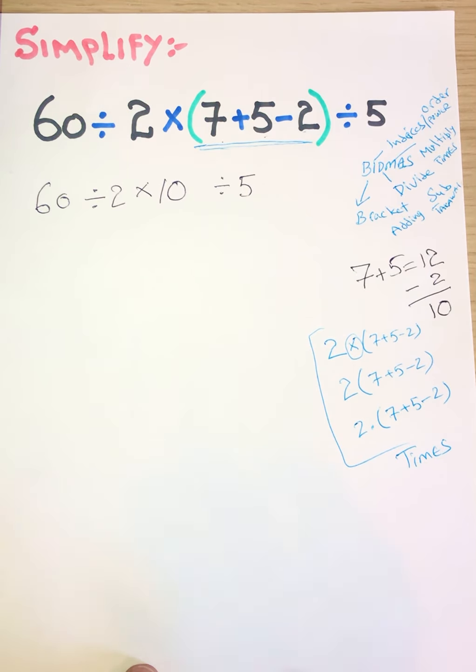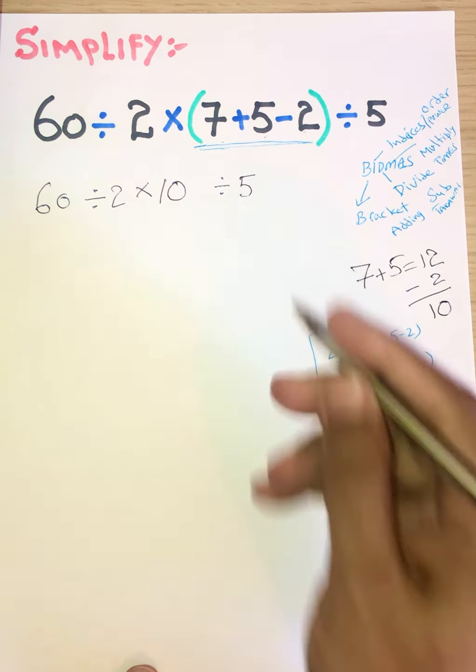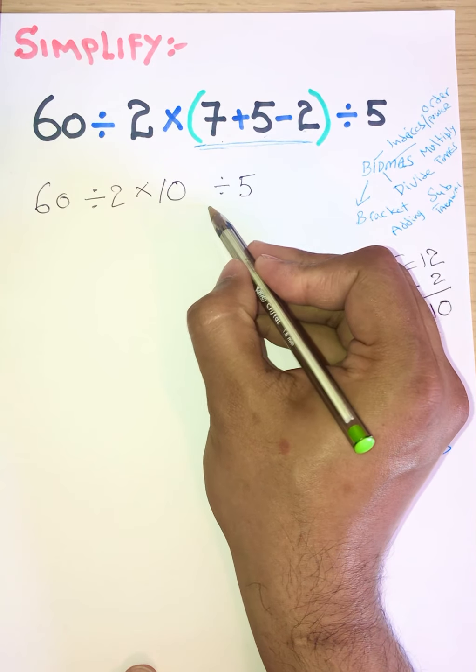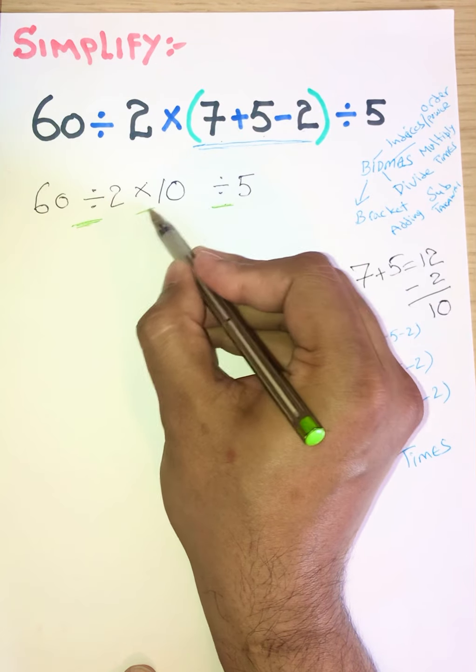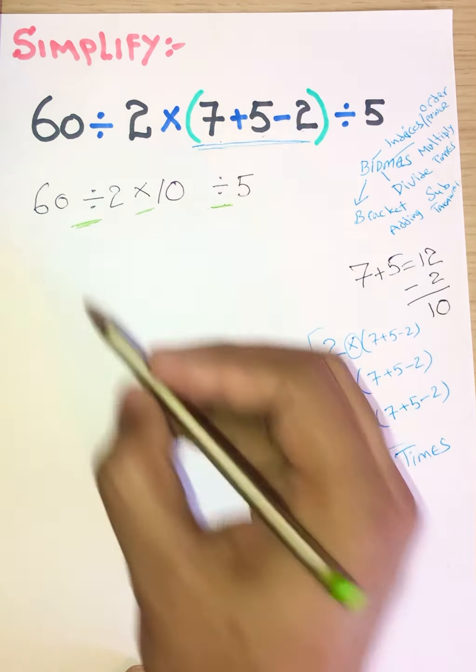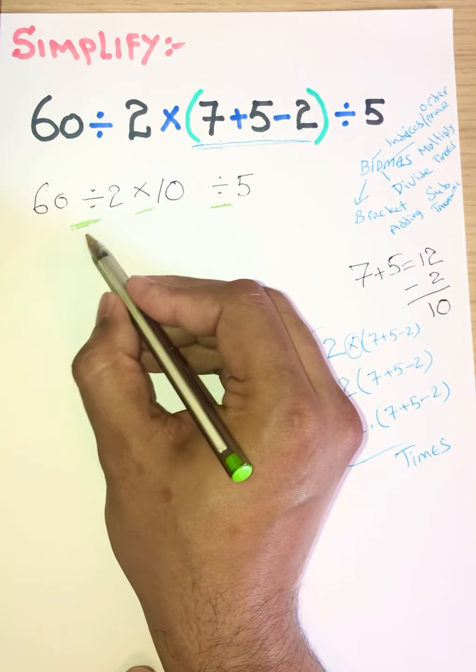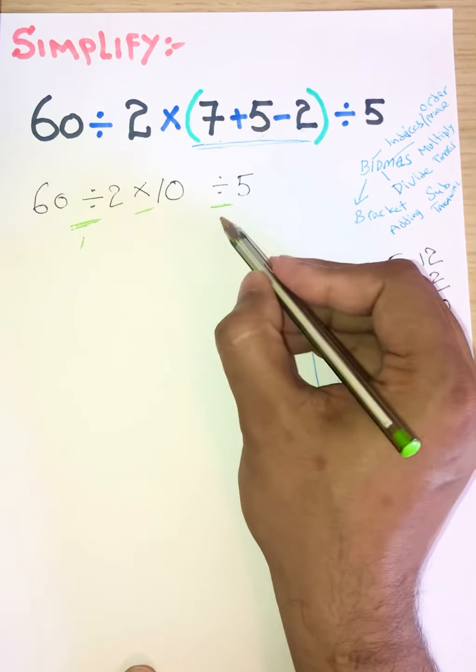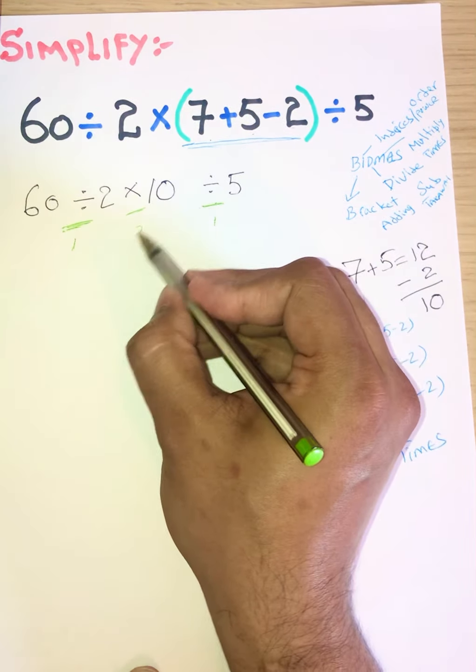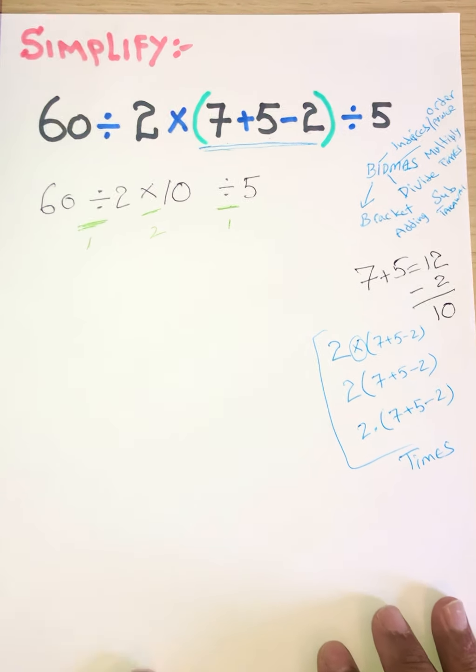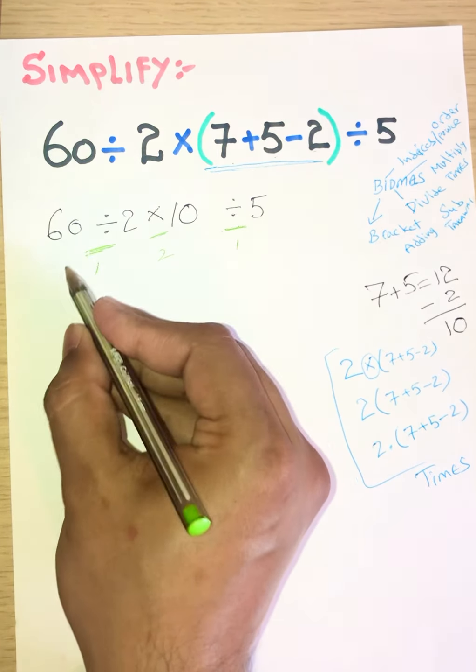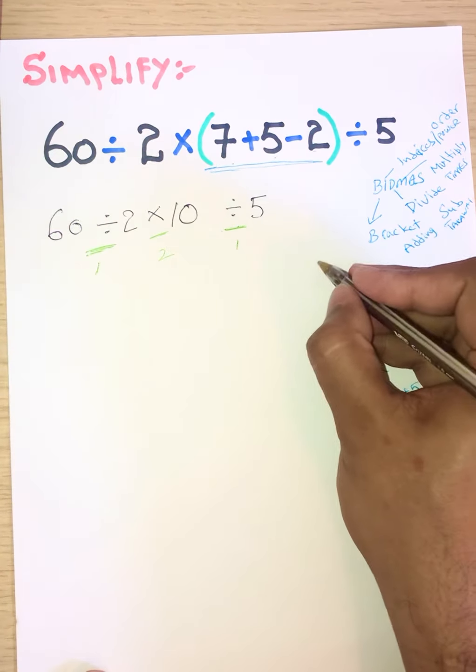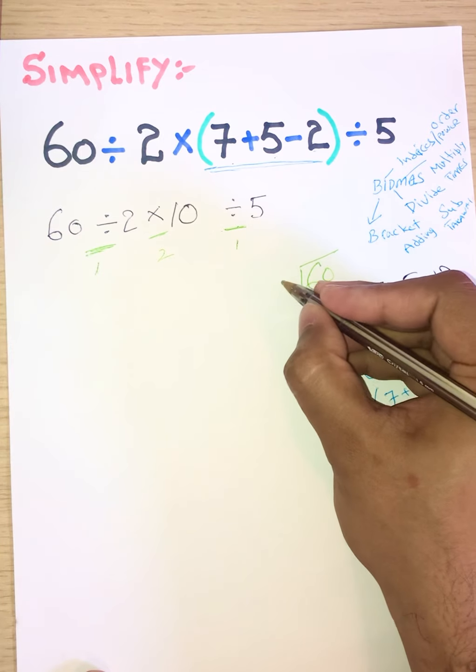Second part of it - we have 4 values and 3 operations we have to use. This is division operation, this is division operation, and this is multiplication operation. First we use division and division, and then second operation we are using multiplying. So you can say 60 divided by 2.